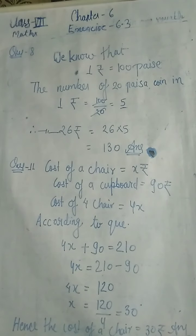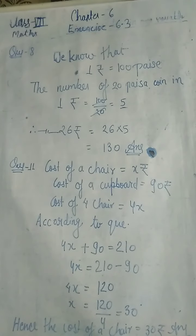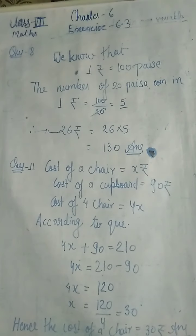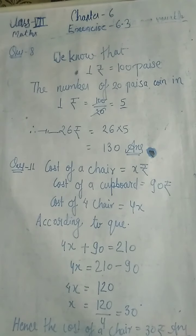Question number 11: The cost of a chair is rupees x and the cost of a cupboard is rupees 90. If the total cost of 4 chairs and a cupboard is 210 rupees, find the cost of a chair. So: aapke paas ek chair hai jiski cost x rupees hai, aur ek cupboard hai jiski cost 90 rupees hai. 4 chairs aur 1 cupboard ka total 210 rupees hai. Aapko 1 chair ki value find karni hai.